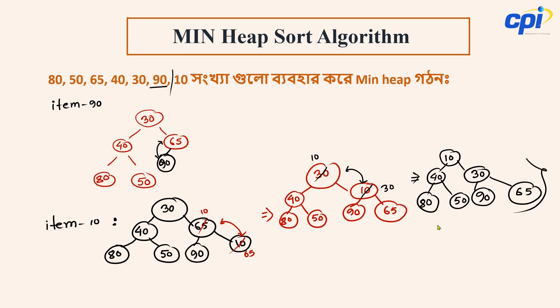Now our complete binary tree is done. We have built the minimum heap — we have to write the root. We have to treat this as a child. So this is root 2, then root 3. We compare children — the smallest child is taken; we have sorted the data in ascending order using the min-heap.